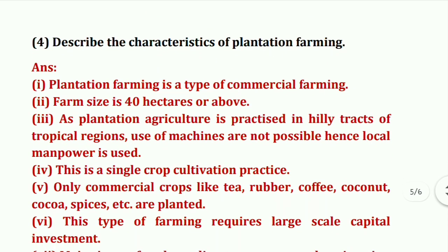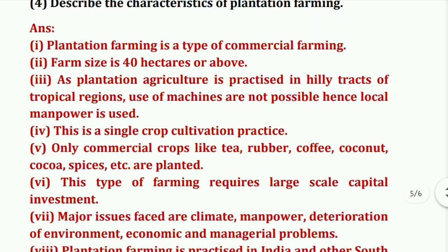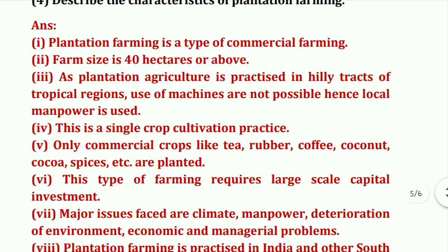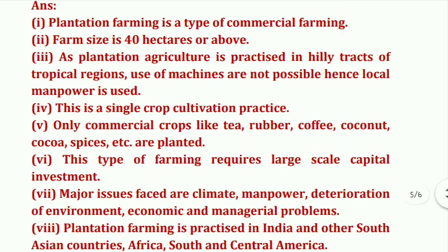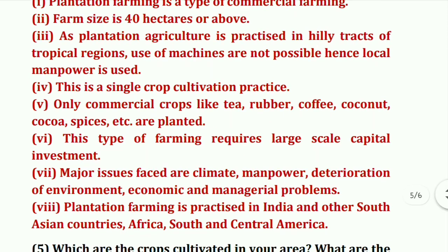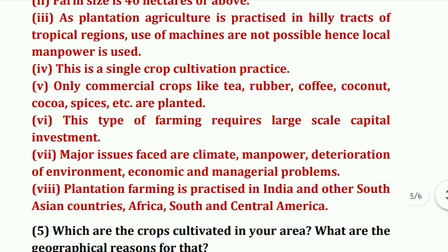Next question: describe the characteristics of plantation farming. Plantation farming has a farm size of 40 hectares or above. As plantation agriculture is practiced in hilly tracts of tropical regions, use of machines is not possible, hence local manpower is used. This is a single-crop cultivation practice. Only commercial crops like tea, rubber, coffee, coconut, cocoa, and spices are planted. This type of farming requires large-scale capital investment, and major issues faced are climate, manpower, deterioration of environment, and economic and managerial problems.